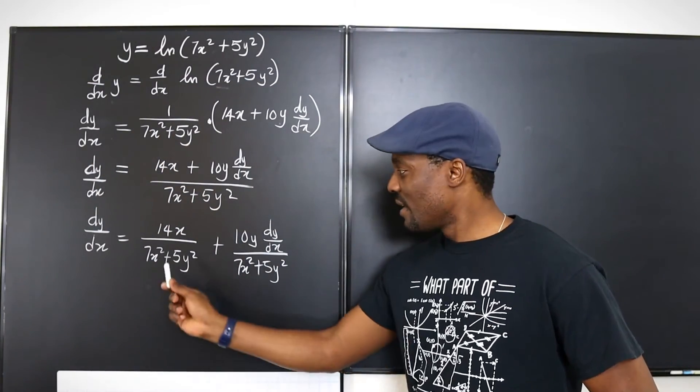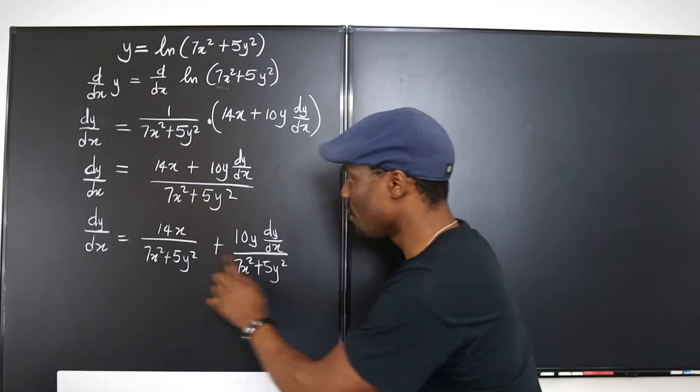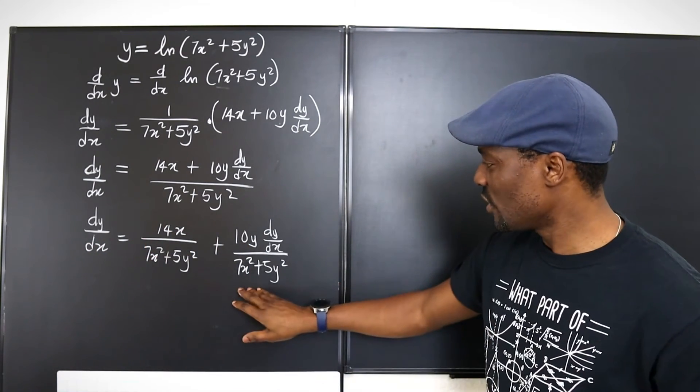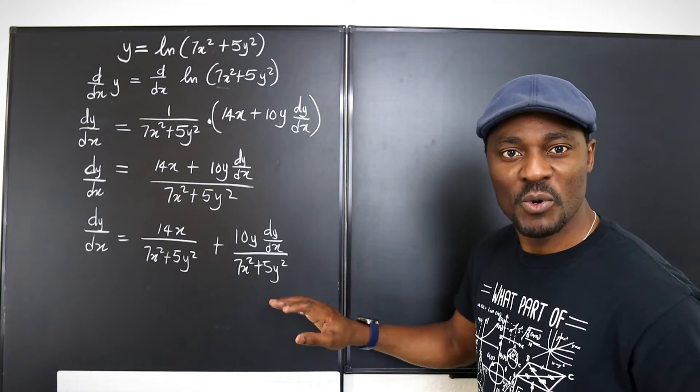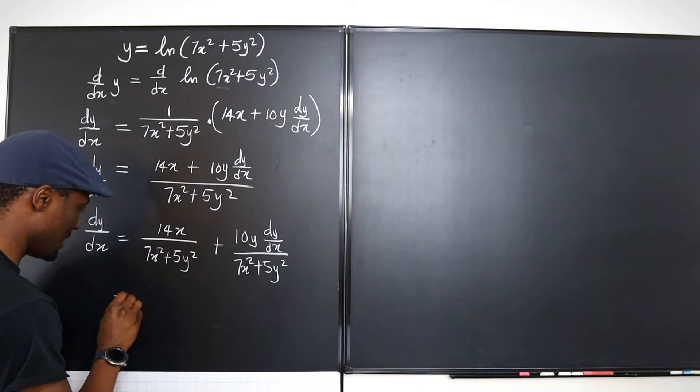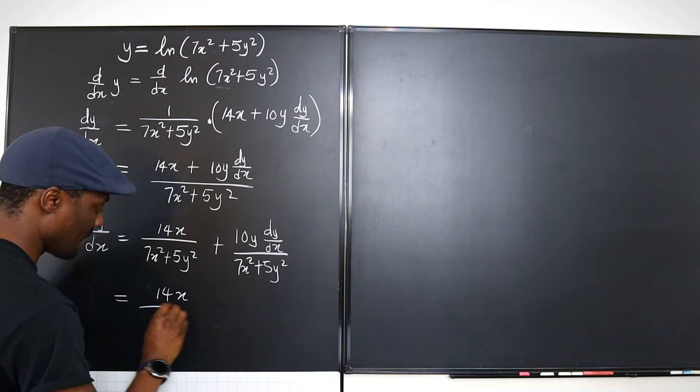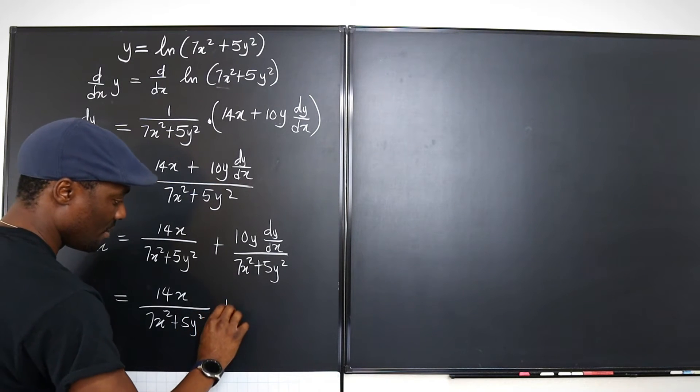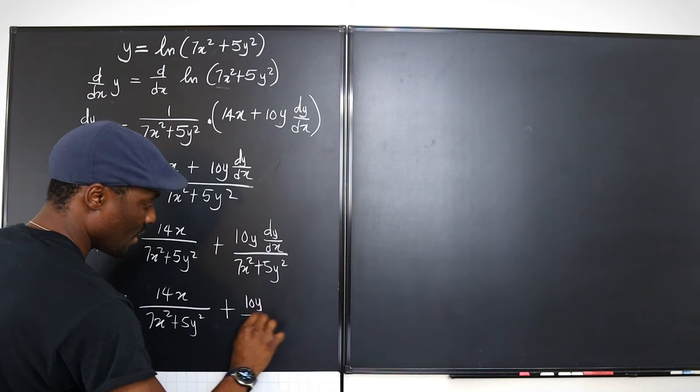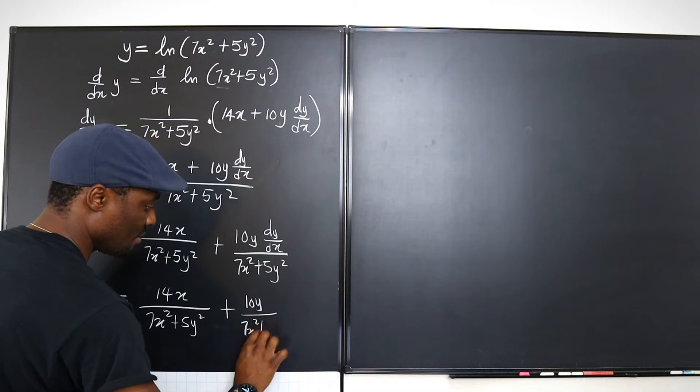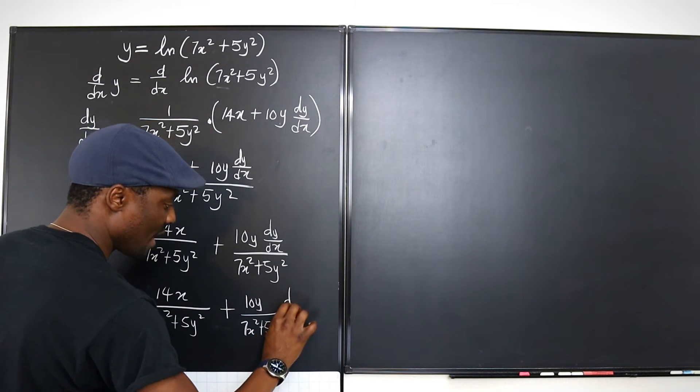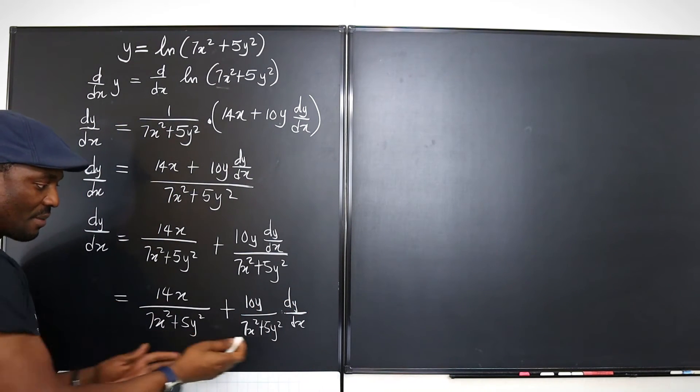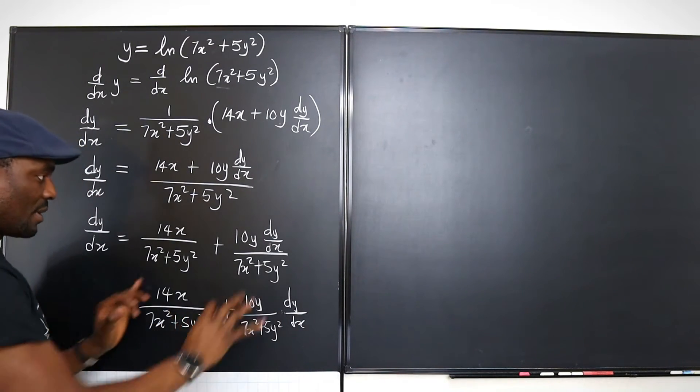So let's move on. So now we have three terms. Two of the terms contain dy/dx. So we can just collect them and we should be fine. Just in order to make this look more beautiful, we can rewrite it this way. We can say this is equal to 14x over (7x² + 5y²) plus this is going to be 10y over (7x² + 5y²). We can just write the dy/dx on the side. So you know that we can easily take it and factor it.